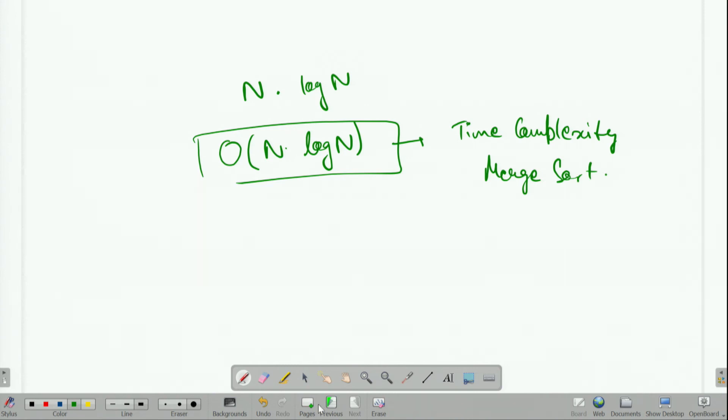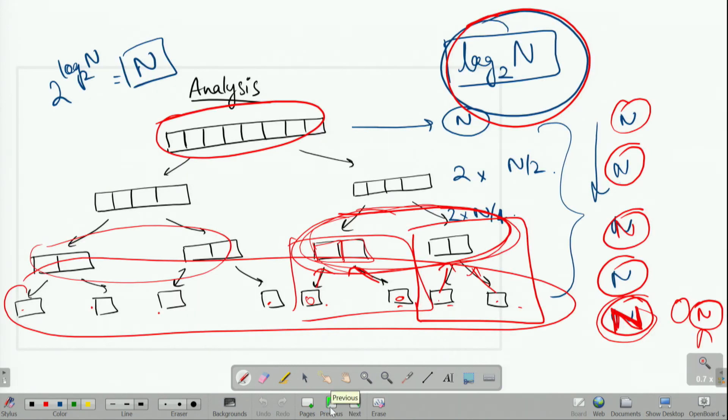Also, if we were to discuss about the space complexity, we would see that at each level, let's say this level, just one level below original array, we need another memory.